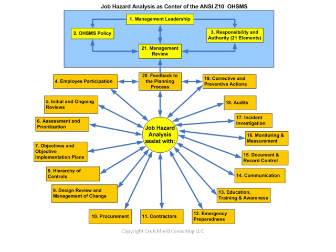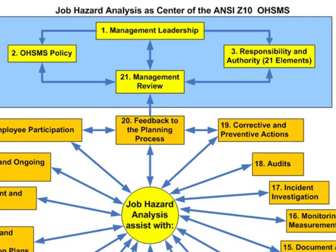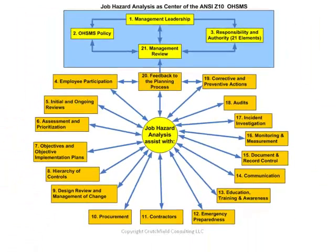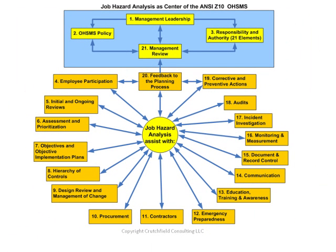The job hazard analysis sits within many of the elements of the Z10. At the top here, you'll note we have the management leadership, which drives the responsibility and authority of the 21 elements, establishes a management review process, and designates, informs, and develops the Occupational Health and Safety Management Systems Policy. Fed into this loop, from the JHA process, are many of the elements of the Z10.